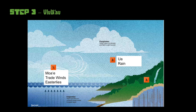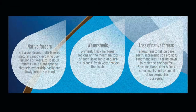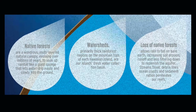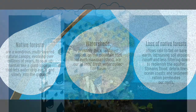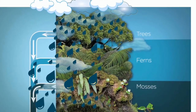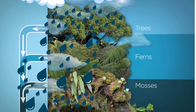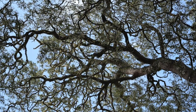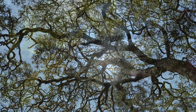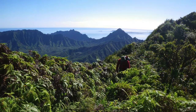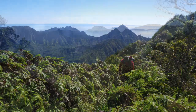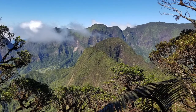Step three is Ulu La'au, or native forests. Native forests are a wondrous multi-layered natural canopy, evolving over millions of years to soak up rainfall like a giant sponge that lets water drip easily and slowly onto the ground. Watersheds are primarily thick rainforest regions on the mountaintops of each Hawaiian island and are our island's fresh water collection basin.